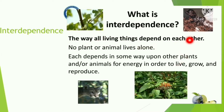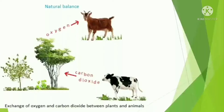The way all living things depend on each other is known as interdependence. No plant or animal lives alone; each depends in some way upon other plants or on animals for energy in order to live, grow, and to reproduce. As we all know, cows exhale carbon dioxide and trees use that carbon dioxide to produce their food.